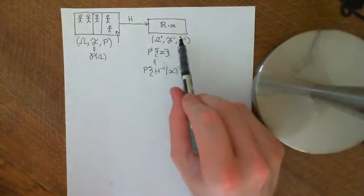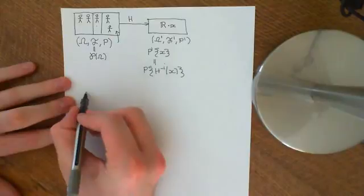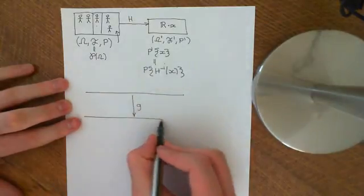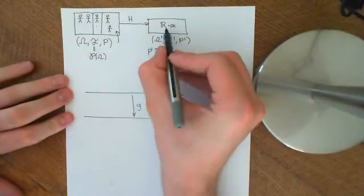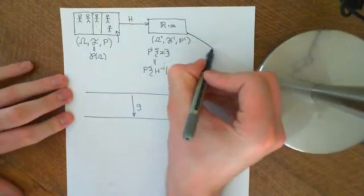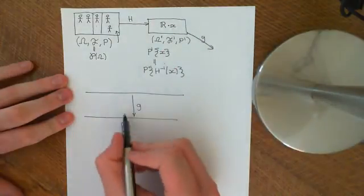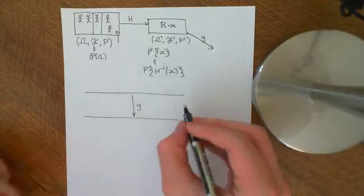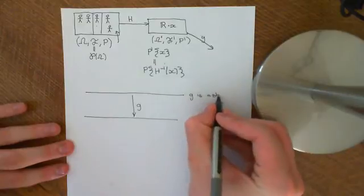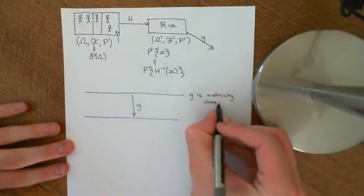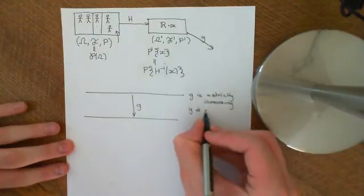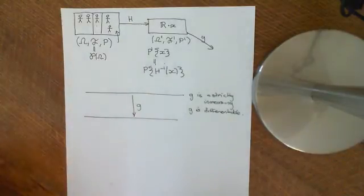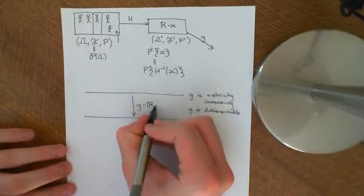Every event back here has a corresponding event in the original probability space, and p-prime of events here equals p of the corresponding event back there. We want p-prime of the singleton containing x to equal the probability of the inverse image h-inverse of x, where h-inverse of x means all people in the original probability space ascribed value x by function h. Now, the random variable takes values in the real numbers. What we now consider is another function g, which maps the real numbers onto the real numbers. We could act g on this probability space. We're going to assume g obeys certain properties: firstly, g is strictly increasing; and secondly, g is differentiable.